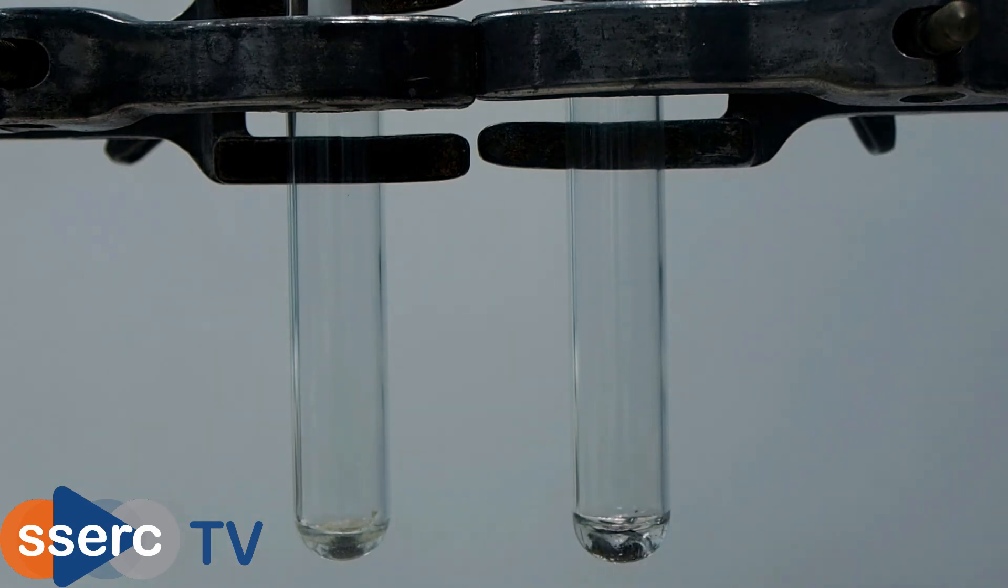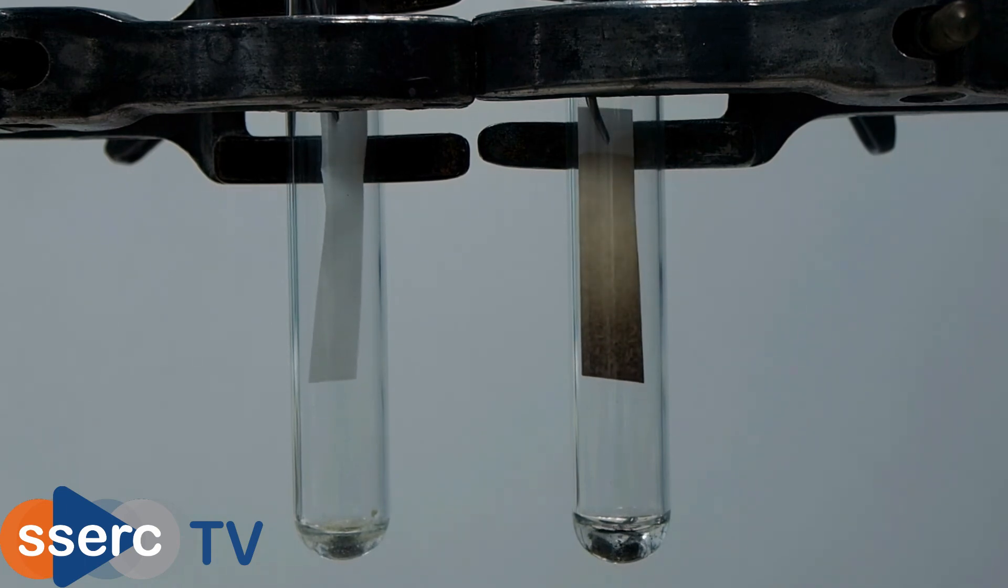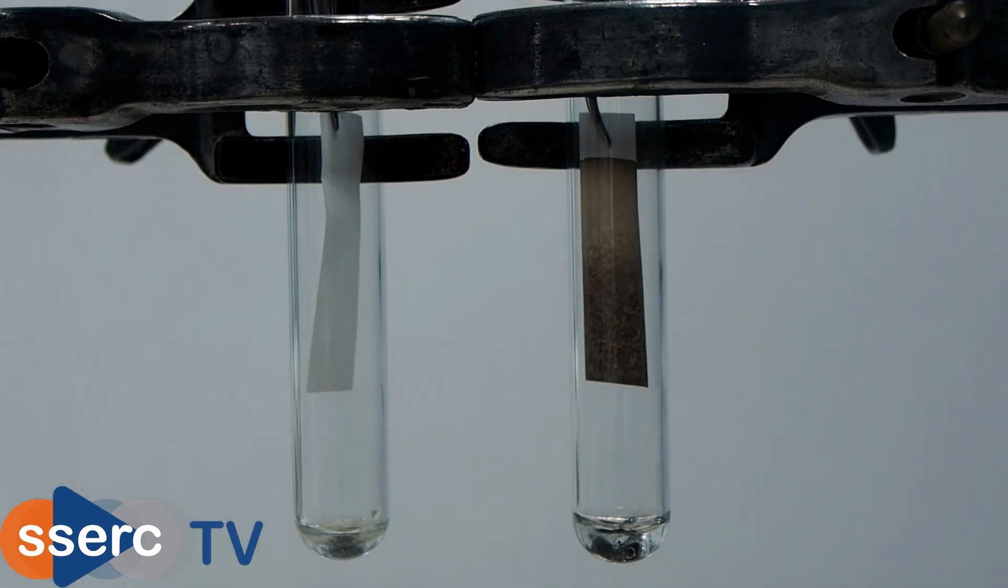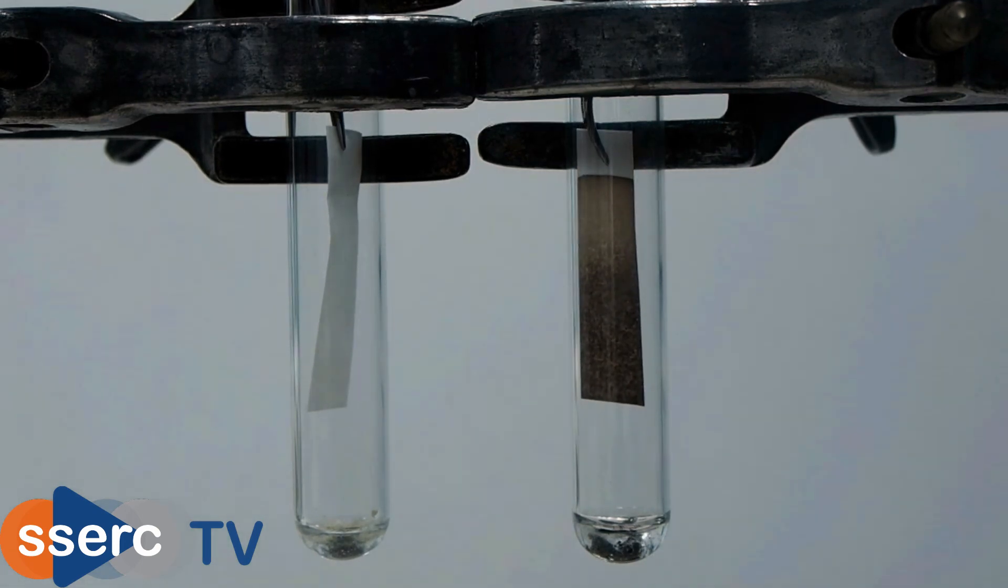You can clearly see that in the tube with our starting materials there is no change, while in the tube with our product the paper rapidly turns black, showing that hydrogen sulfide is being produced and that we have indeed made iron sulfide. And so a chemical reaction has taken place.